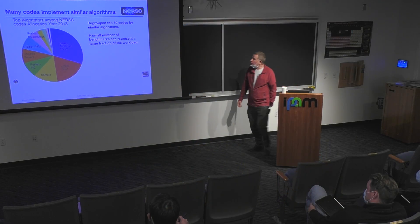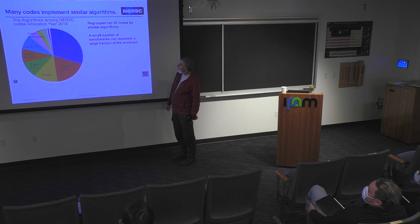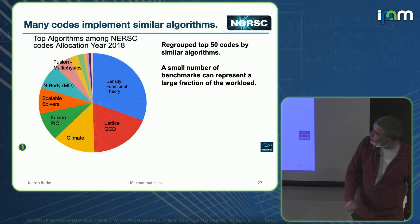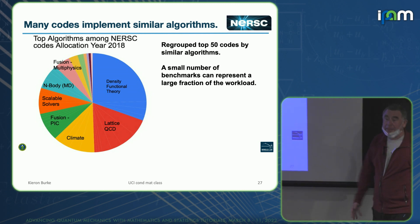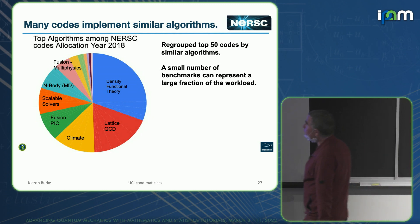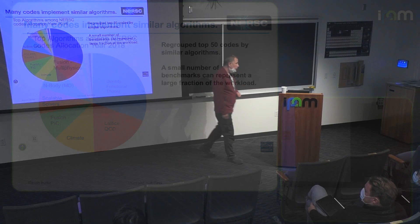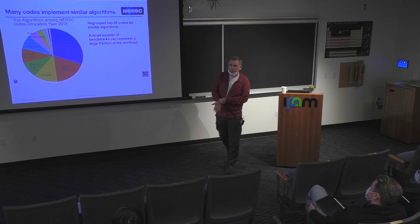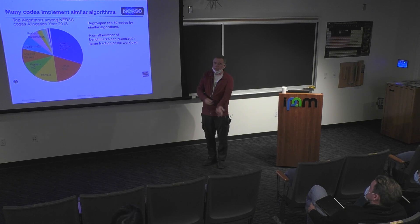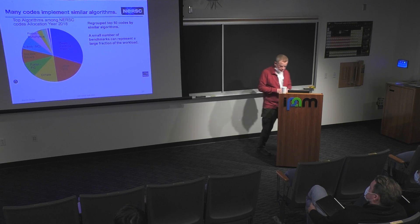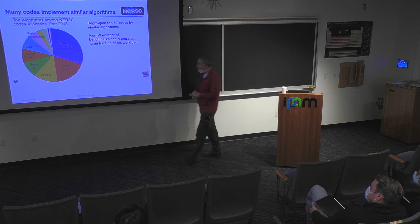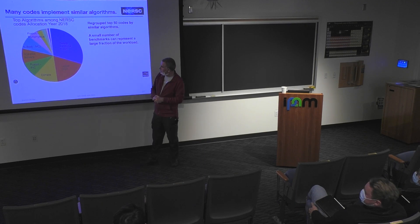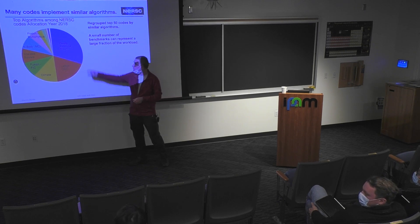Numbers from NERSC, which runs the DOE supercomputers, show that DFT calculations take up more computational time than anything else — more than climate change, more than everything. There are about 50,000 papers per year now published reporting DFT results.